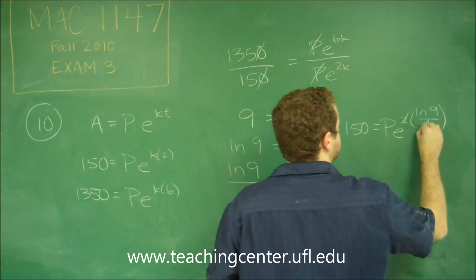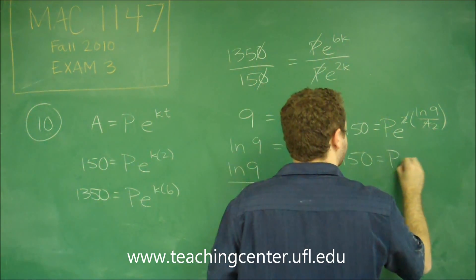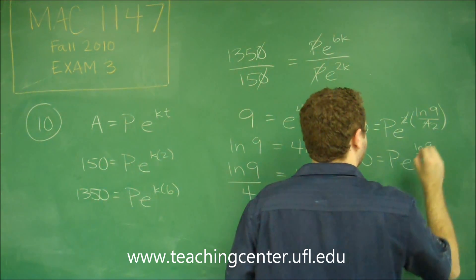Well, this 2 cancels to make that a 2. So we get 150 equals PE to the ln 9 over 2.